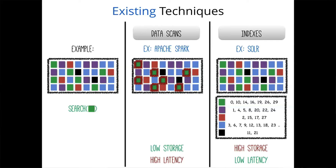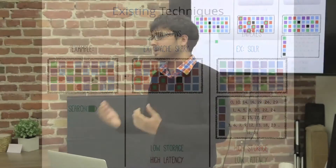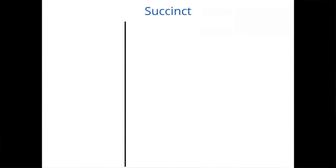The other approach is to use indexes, common in systems like Elasticsearch or Solr. In addition to raw data, you store an additional data structure — an inverted index — mapping colored blocks to their locations in the file. Looking up the green block entry gives you the result quickly, so latency is low. But you have to store this additional index structure, leading to very high storage overheads. When you already have a large dataset and constrained memory, these indexes bloat your storage footprint, causing data to not fit in memory and thrashing the cache. Counterintuitively, using indexes actually leads to worse performance in those situations.